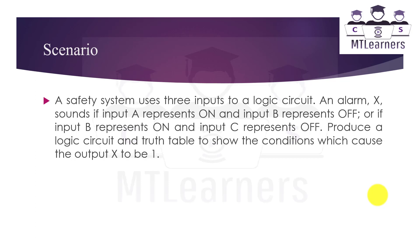An alarm X sounds if input A represents on and input B represents off, or if input B represents on and input C represents off. Produce a logic circuit and truth table to show the conditions which cause the output X to be one. Firstly we will identify the inputs and outputs from this scenario.